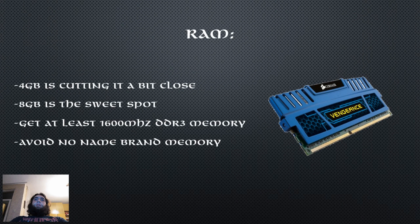A common mistake I've seen people make is with the combination of RAM quantity and speed. Some people configure their builds with only 4GB of RAM, which in my opinion is cutting it a bit close considering how RAM-hungry games are these days. I personally think that 8GB of DDR3 1600MHz memory is the sweet spot in these budget builds. Try to get at least 1600MHz DDR3 memory, but don't overdo it unless you are using an APU or an integrated graphics-based system — you don't need insanely fast RAM, so put the saved money in the GPU.